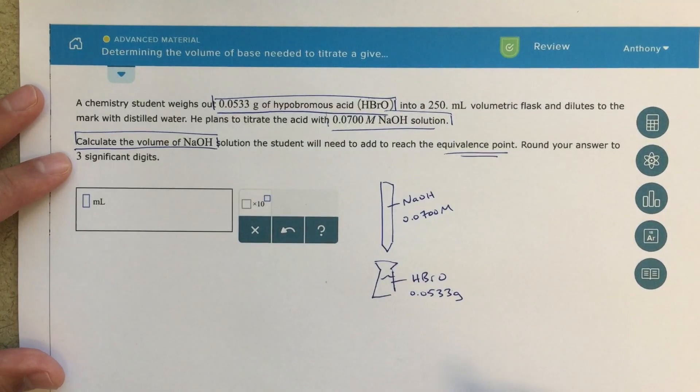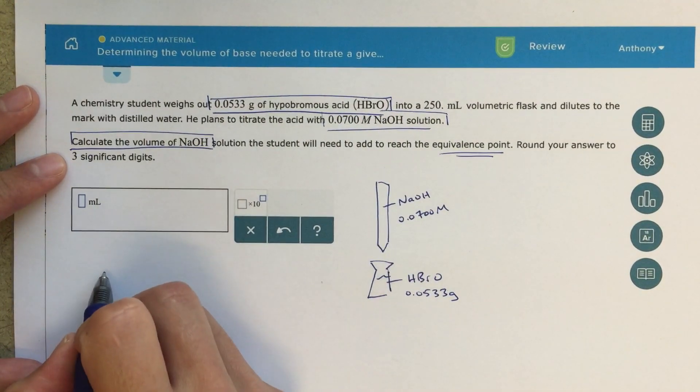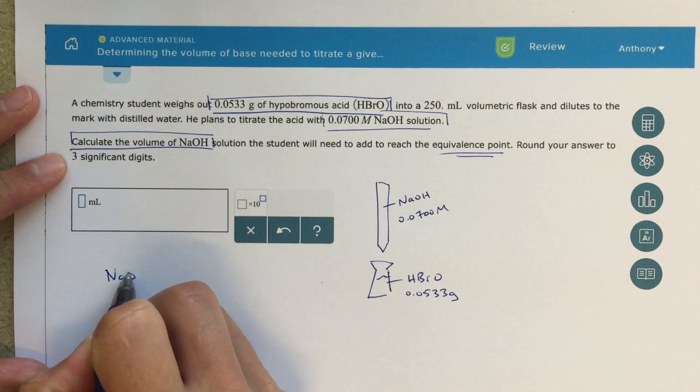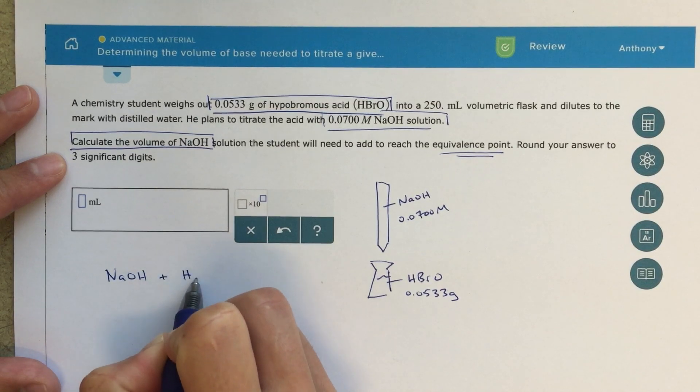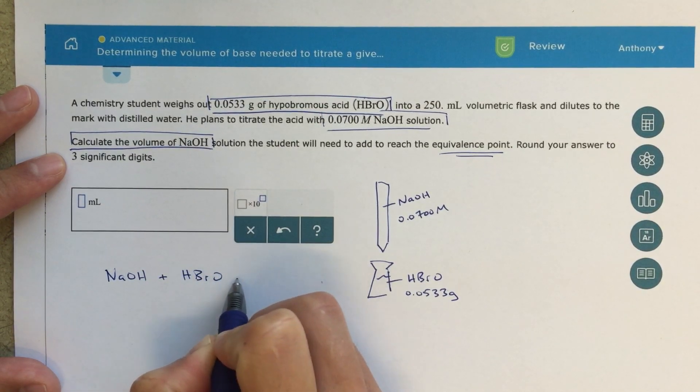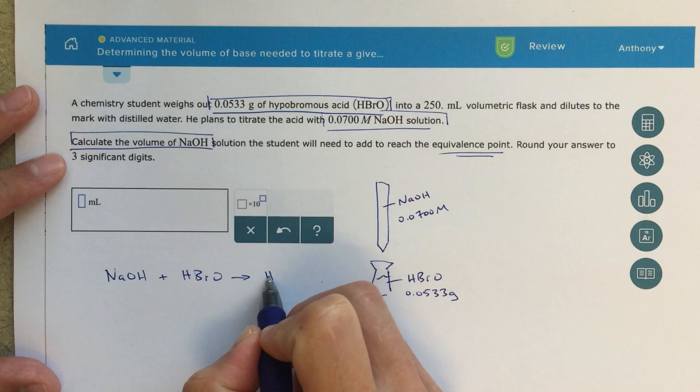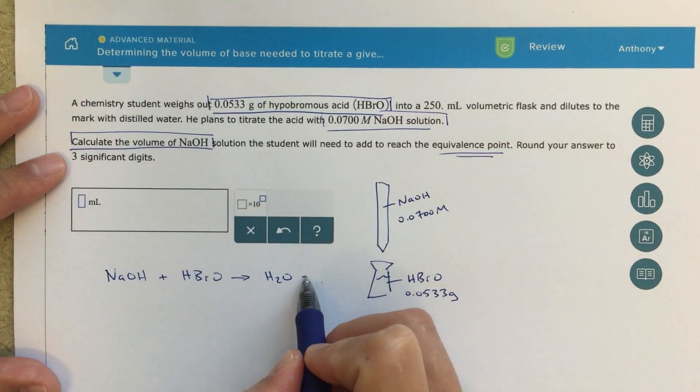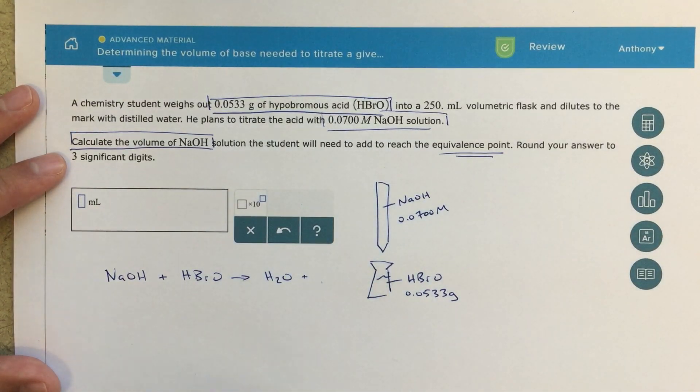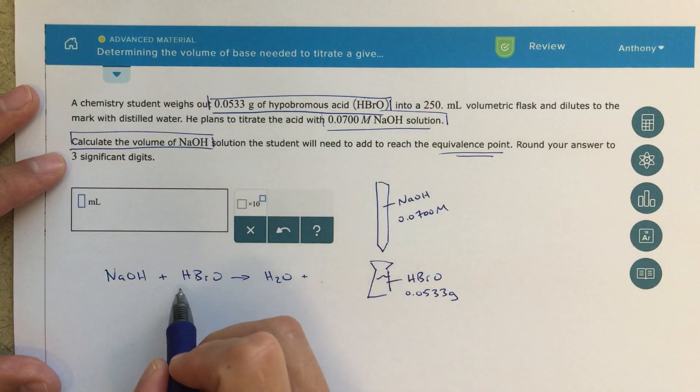Always, always, always, what I would encourage you to do is write out a balanced chemical equation. Sodium hydroxide plus HBRO is going to react to form water. The first thing that we want to be writing down here is water. Again, we know it's a neutralization reaction, acid and base, we're going to be forming water.